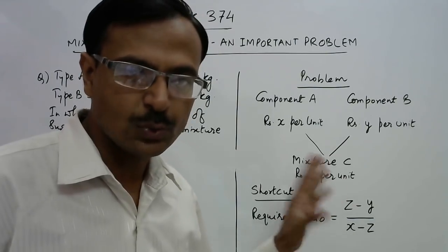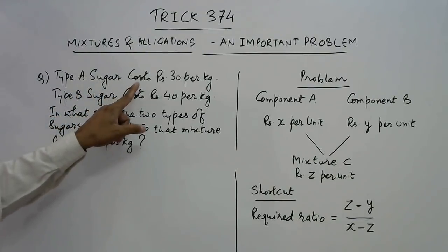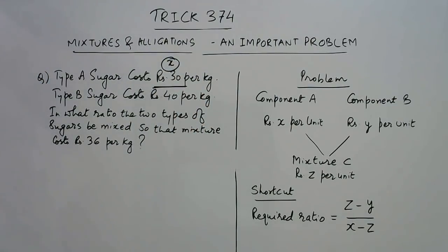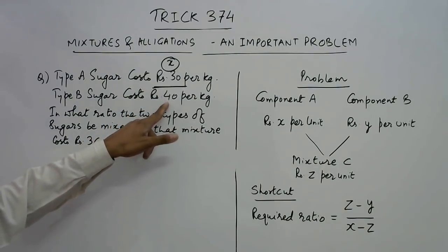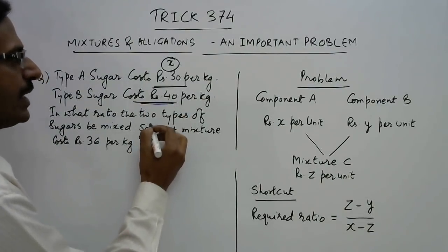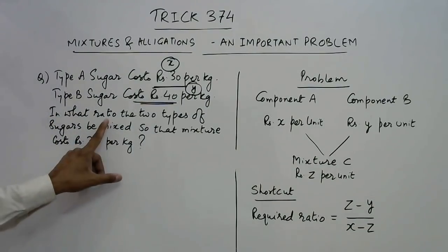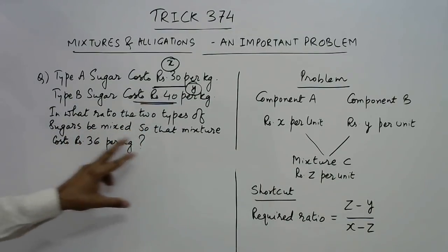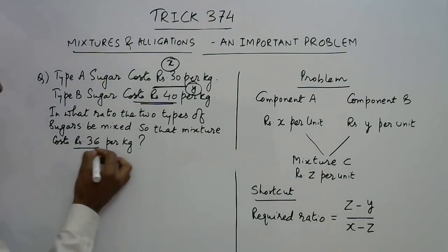Let us understand this shortcut using a problem. Type A sugar costs rupees 30 per kg — this is assumed as x, the cost of the first component. Type B sugar costs rupees 40 per kg — this is assumed as y. In what ratio must the two types of sugars be mixed so that the mixture costs rupees 36 per kg? This is the mixture cost, assumed as z.